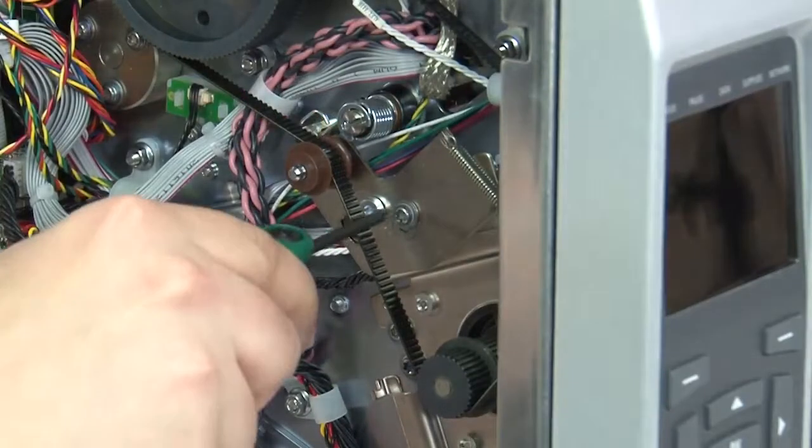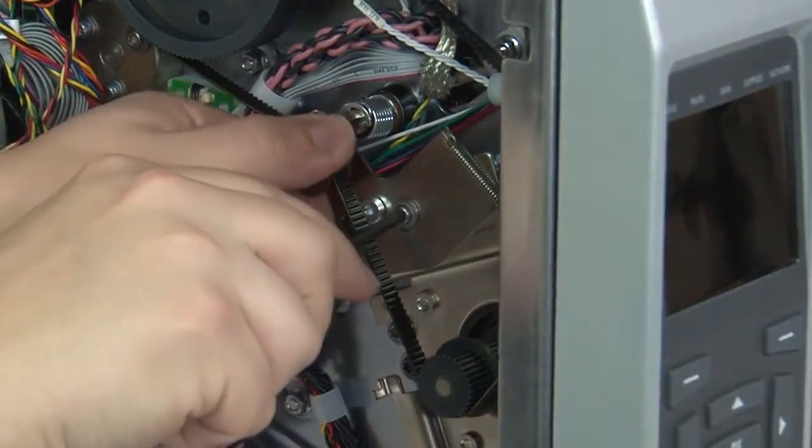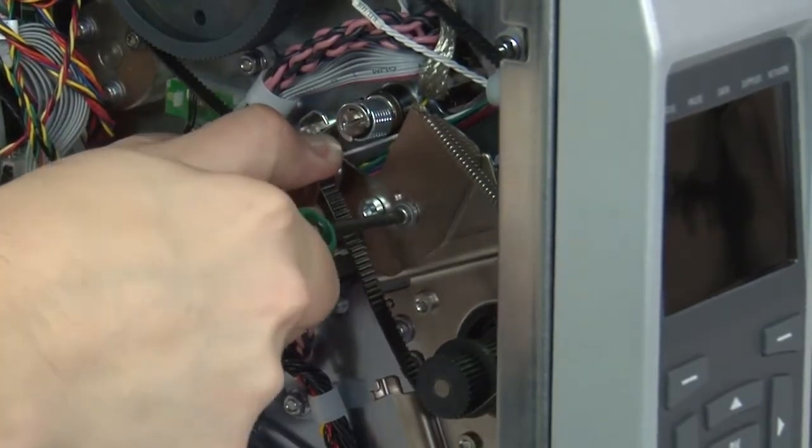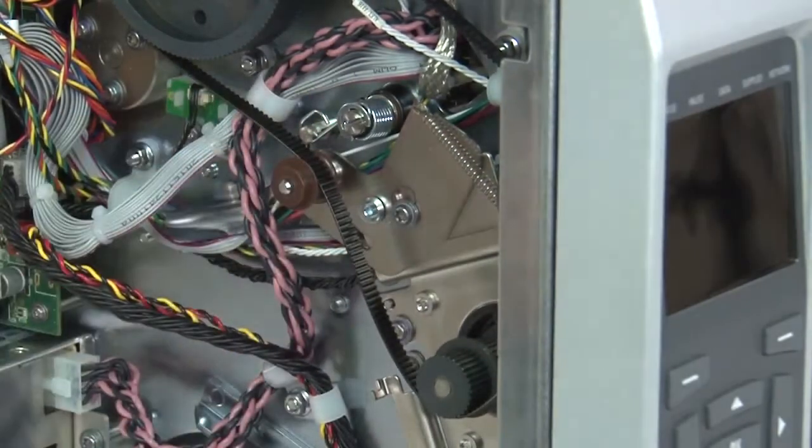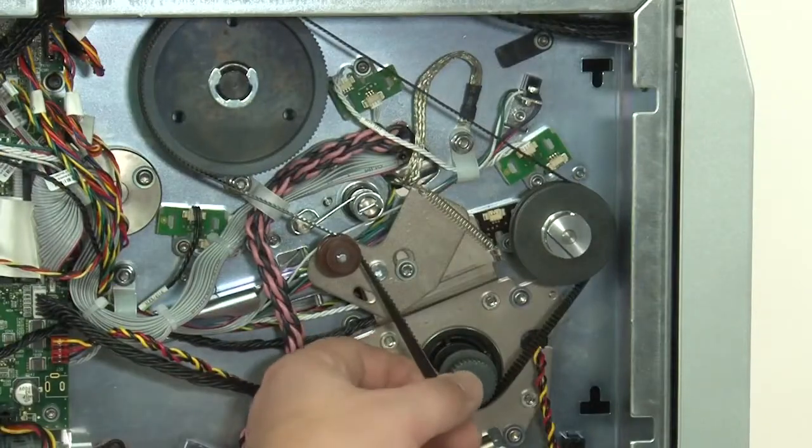Loosen the locking screw on the main drive belt tensioner. Move the main drive belt tensioner, then tighten the locking screw. Slide the main drive belt out.